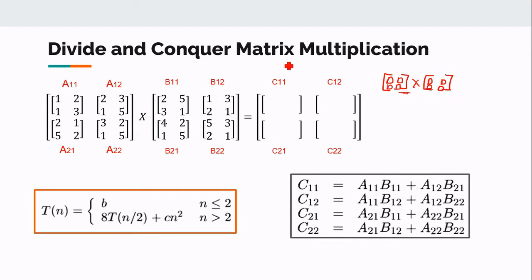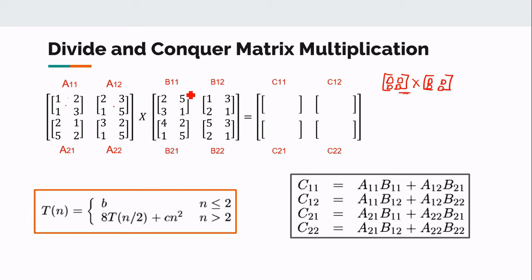Whatever the size of the matrix, we divide it into halves until the size becomes 2x2. For a 4x4 matrix, we divide it into four 2x2 submatrices. We name these matrices A11, A12, A21, and A22 for matrix A, and similarly for matrix B.